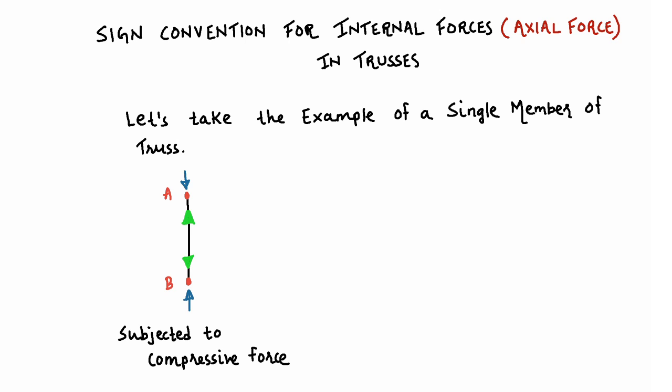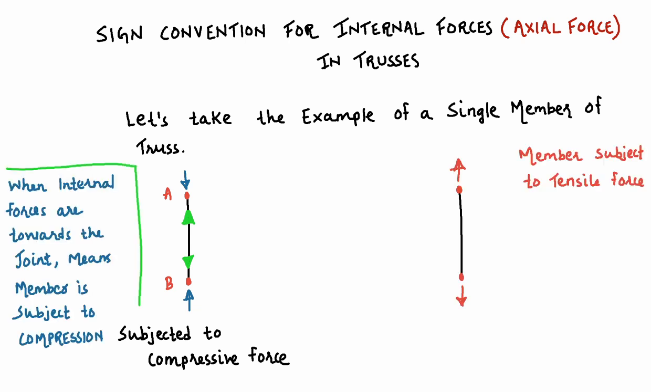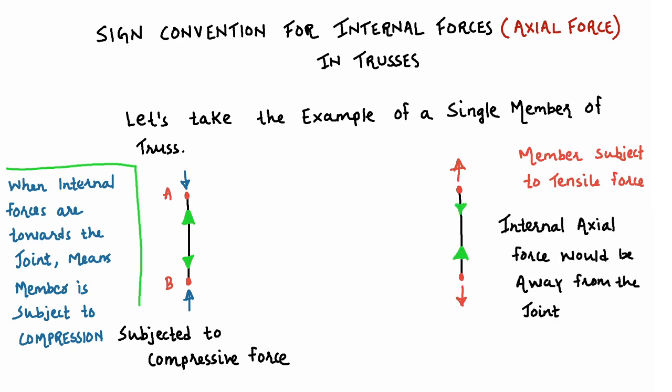When the member develops an internal axial force towards the joint, it means that member is subjected to compressive force. Similarly, when a single member is subjected to tensile force, it develops an internal axial force away from the joint. So when you encounter that the internal axial force is away from the joint, it means the member is subjected to tensile force.